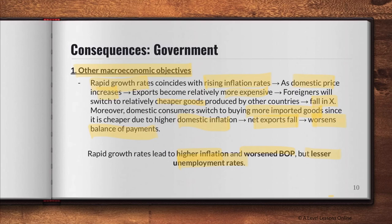Rapid growth rates can lead to high inflation and a worsened balance of payments, but also lesser unemployment. It really depends on the context — there are benefits and drawbacks. For every trade-off, a country may choose to pursue low inflation but as a result cut back on exports, worsening the balance of payments. You need to look at the whole case very objectively. A bonus video covering how to link all the different goals together and see the different trade-offs may be coming.